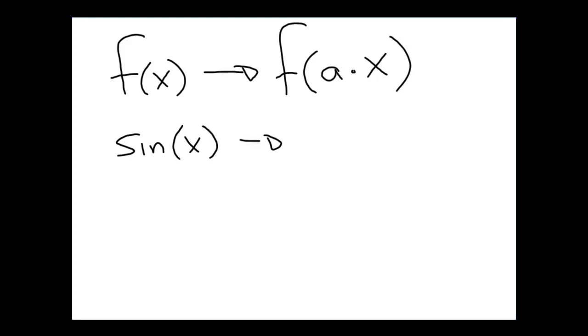We get another transformation now, and this transformation is one in which we multiply the function. Here we're going to take our function f of x and transform it by multiplying x by a. So in our particular case here, we might look at transforming sine of x into the sine of 2x.